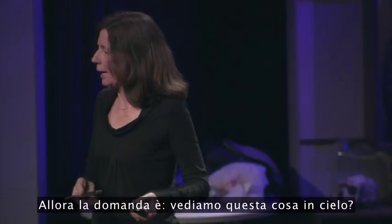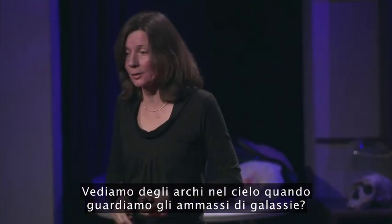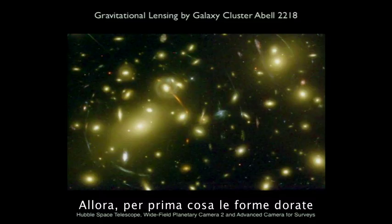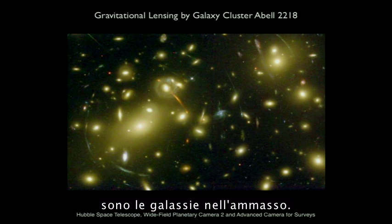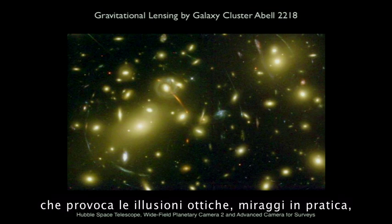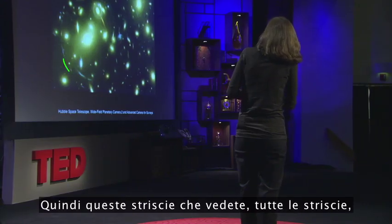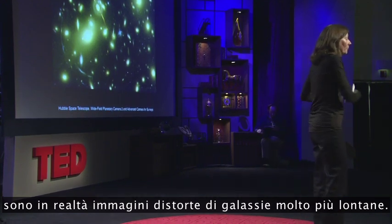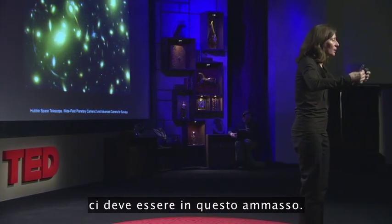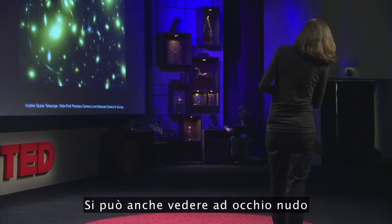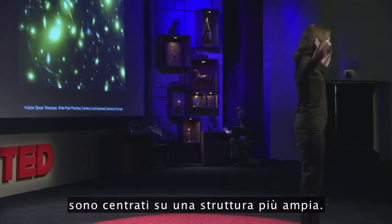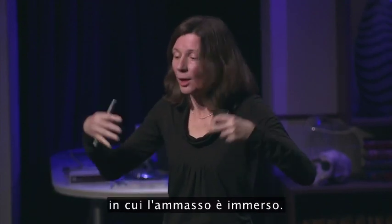So the question is: do we see this in the sky? Do we see arcs when we look at a cluster of galaxies? The answer is yes. Here's an image from the Hubble Space Telescope. The golden-shaped galaxies are the galaxies in the cluster — they're embedded in that sea of dark matter that is causing the bending of light, creating these optical illusions or mirages of the background galaxies. The streaks you see are actually distorted images of galaxies that are much further away. Based on how much distortion we see, we can calculate how much mass must be in this cluster — it's an enormous amount. You can also tell by eye that these arcs are not centered on individual galaxies but on some more spread-out structure: the dark matter in which the cluster is embedded.